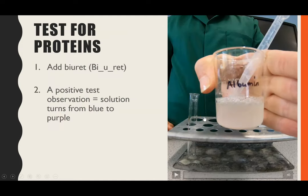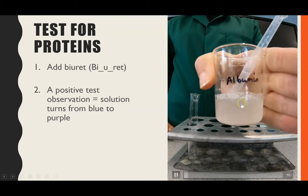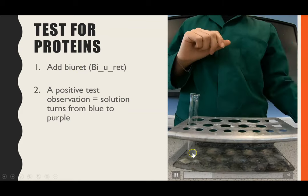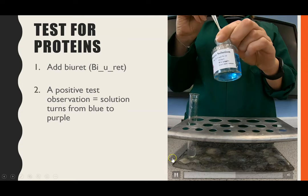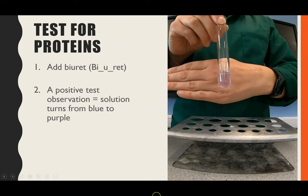The next test is for proteins. You add biuret reagent — note the correct pronunciation is 'biuret,' not 'buret,' which is a piece of chemistry equipment. Biuret is a bright blue solution. I'm using albumin as the protein sample. Adding the protein sample to the biuret reagent, the positive result is that it turns a purple-lilac colour.